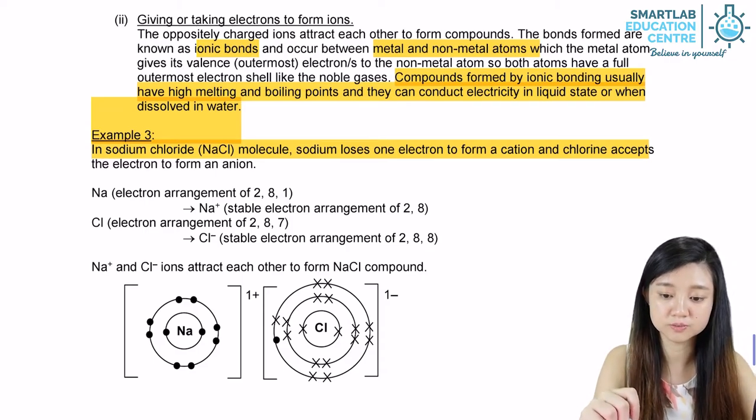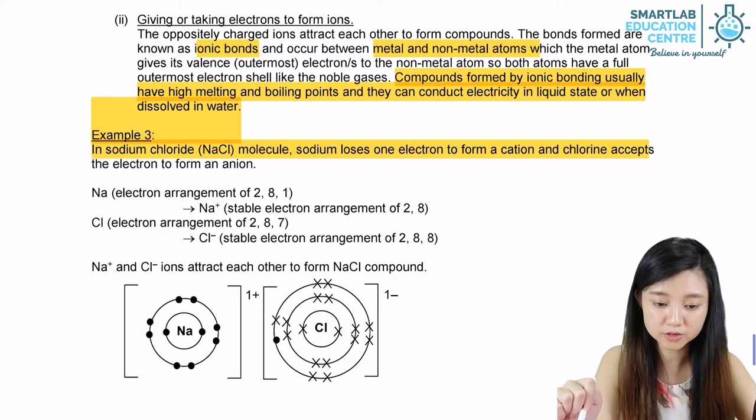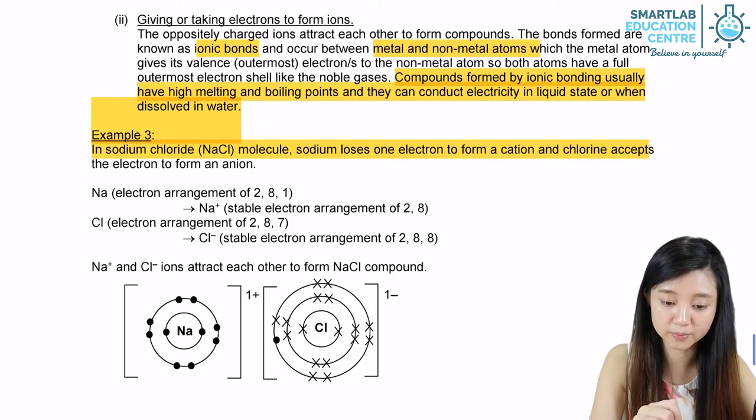During this bonding, sodium loses one electron to form a cation, while chlorine accepts the electron to form an anion.